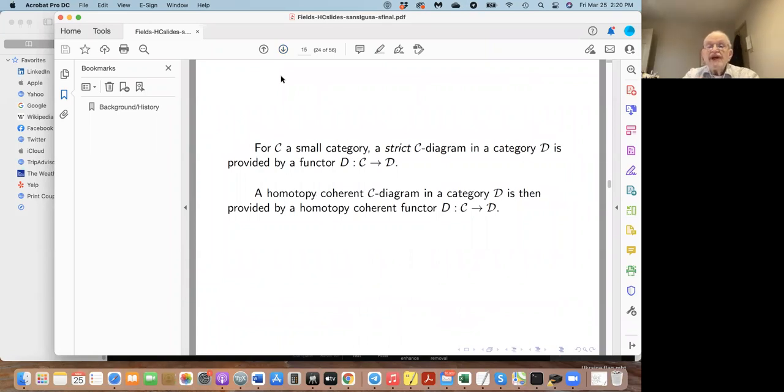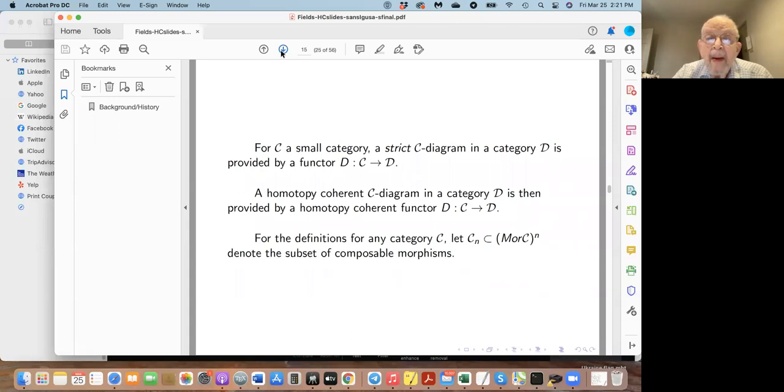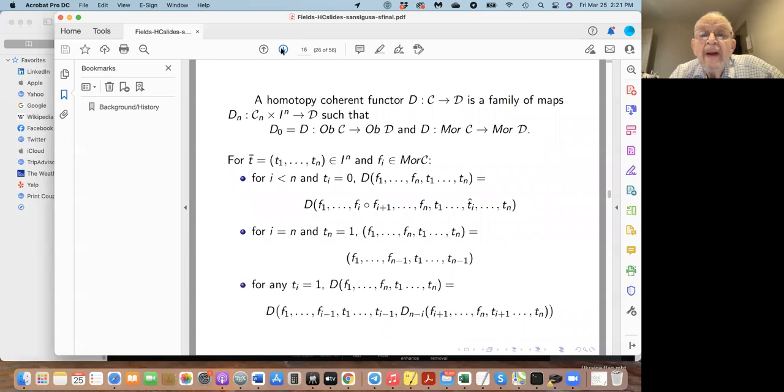For G a small category, a strict G-diagram is just a functor. Think of it as a diagram where there's a point for each object in the category and an arrow from point to point for each morphism. A homotopy coherent diagram is then provided by a homotopy coherent functor, except I still haven't told you precisely what that means. Let me use the notation of composable morphisms forming a subspace of the n-fold product of the morphisms. Here's the formal definition.